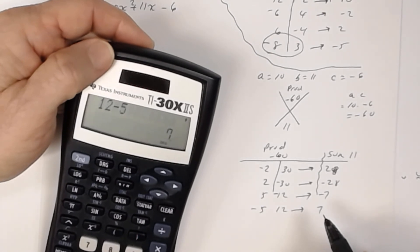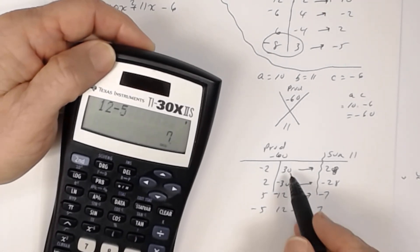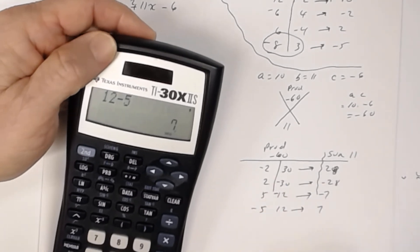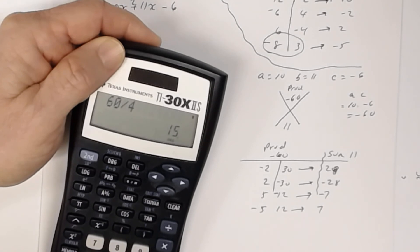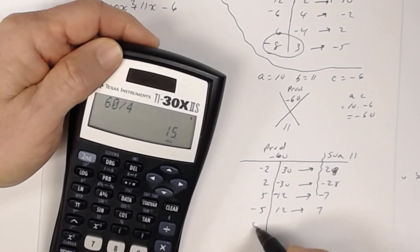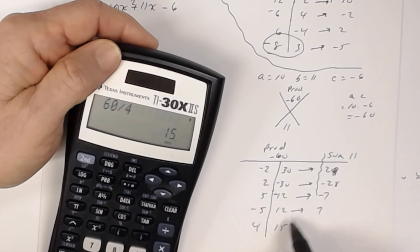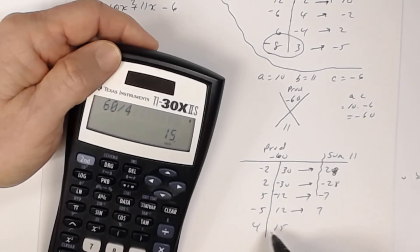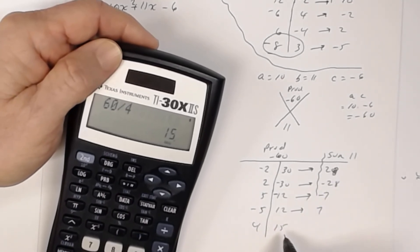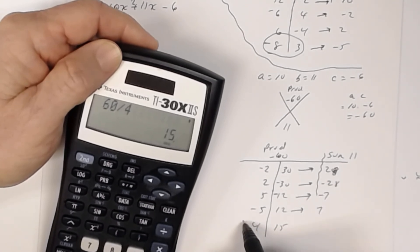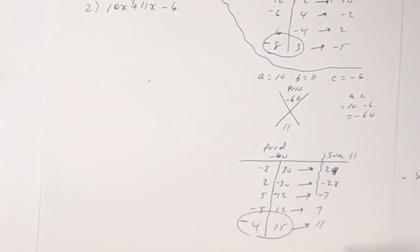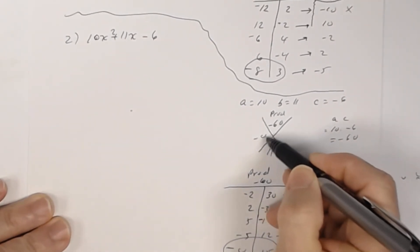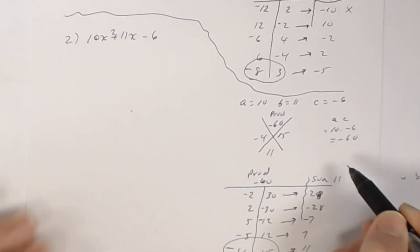Let's try 4 and 15, since 60 divided by 4 is 15. 15 minus 4 is 11 — there we go! To get positive 11, the 4 must be negative. So negative 4 and positive 15 give a product of negative 60 and a sum of positive 11. Those are the two numbers we need.